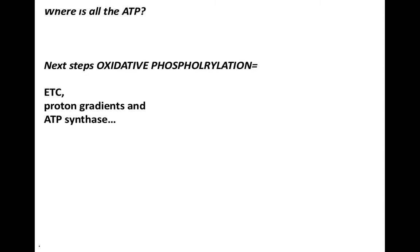Up until this point, the cell has only gained 4 ATP by substrate-level phosphorylation, so the question is: where is all the ATP? The next event is the key event of aerobic respiration — oxidative phosphorylation.